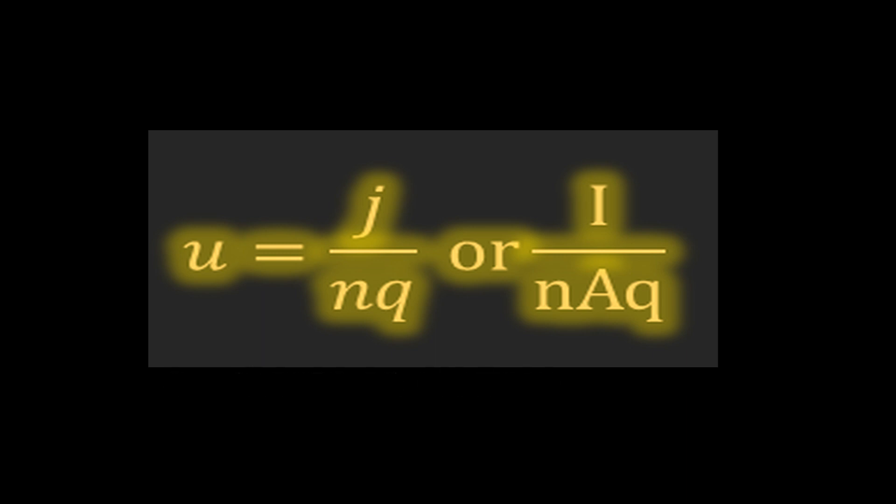We know that the current density J equals current divided by area. So substituting the value for J, we will have drift velocity equals I divided by NAQ, where A is the cross-sectional area and I is the current. The unit of drift velocity is meter per second.